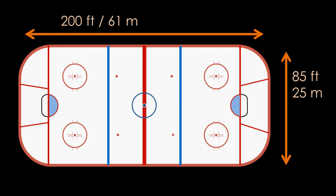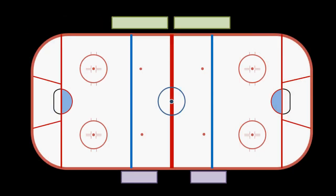The next element of the rink is the benches, which is where the players sit during the game. During play, each team will have five players plus their goalie on the ice. But these players can change at any time, even while the puck is in play — one player will skate over and hop onto the bench while another jumps off and onto the ice. This happens very quickly and it might seem confusing at first when five guys are jumping on and five are jumping off at the same time.